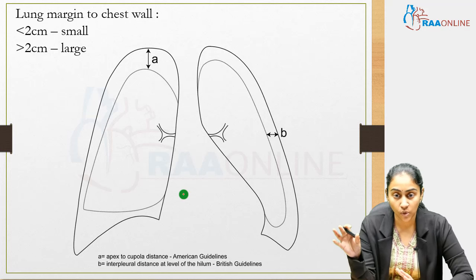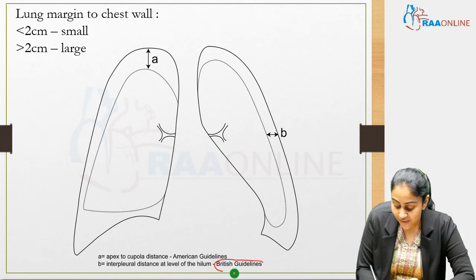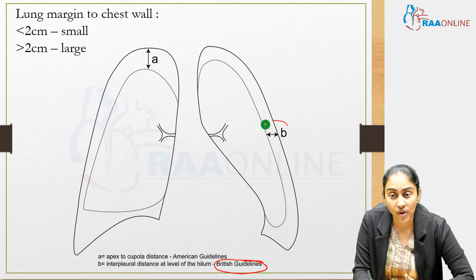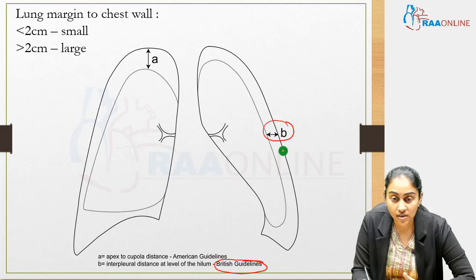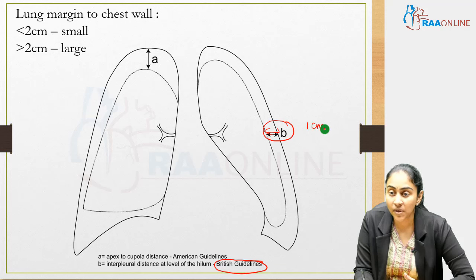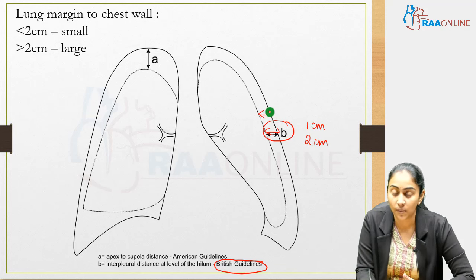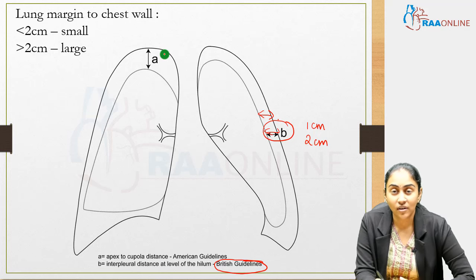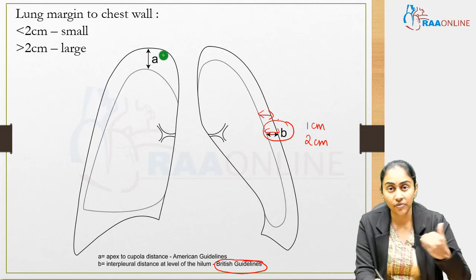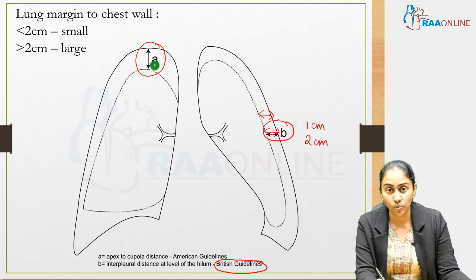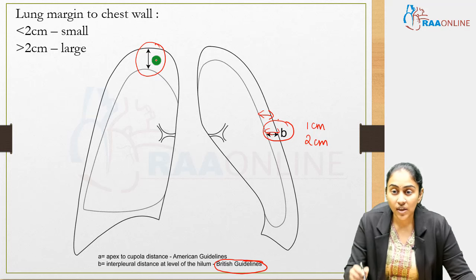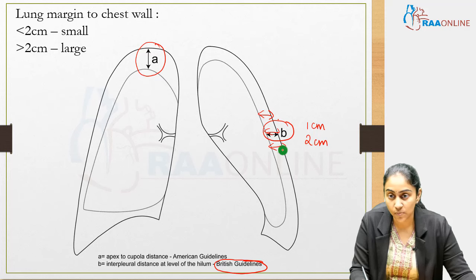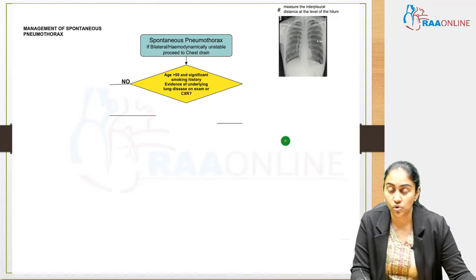Regarding measurement of pneumothorax size for MRCP — based on British guidelines — measure the interpleural distance at the level of the hilum. An interpleural distance less than two centimetres is a small pneumothorax; more than two centimetres is a large pneumothorax. The American guidelines measure apex-to-cupola distance, but British guidelines are used for MRCP.